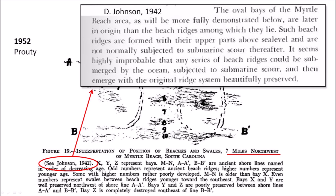He wrote: the oval bays of the Myrtle Beach area are later in origin than the beach ridges among which they lie. Such beach ridges are formed with their upper parts above sea level and are not normally subjected to submarine scour thereafter. It seems highly improbable that any series of beach ridges could be submerged by the ocean, subjected to submarine scour, and then emerge with the original ridge system beautifully preserved.